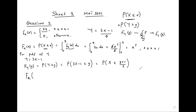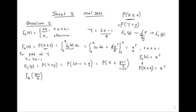Now we substitute into our known CDF. Since F(x) = x², wherever there is x we now place (y + 1)/3. So F_Y(y) = ((y + 1)/3)² = (y + 1)²/9. We also need to track the domain: we had 0 ≤ x ≤ 1, so replace x with (y + 1)/3.